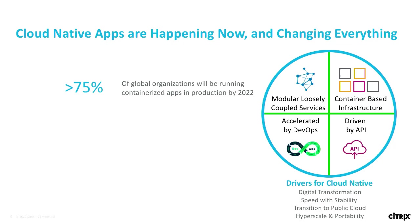A survey found that 75% of global organizations will be running Cloud Native apps in production by 2023. Today perhaps 5% of apps are already Cloud Native. But five to six years out, companies expect more than half — closer to 75% — of their apps to be Cloud Native. So there's a big push and growth rate expected.